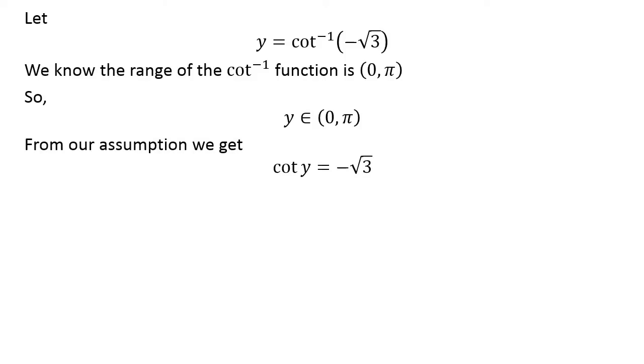Applying properties of inverse functions, we can rewrite y equals inverse cotangent of minus square root of 3 as cotangent of y equals minus square root of 3. We know cotangent of pi over 6 equals square root of 3.